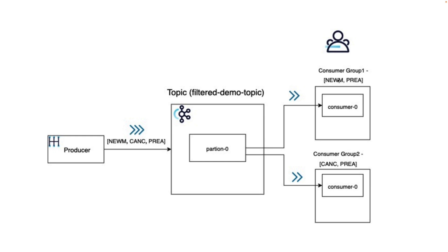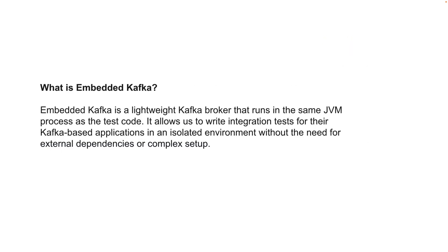What we want to test is: if there is a newM event on the topic, that will be consumed, and if there is any other event other than newM, that should not be consumed by this particular consumer. We are going to use embedded Kafka provided by Spring Kafka Test to test this. We want to use embedded Kafka because it provides a very lightweight, in-memory kind of Kafka setup where we don't have to depend on an external running Kafka cluster.